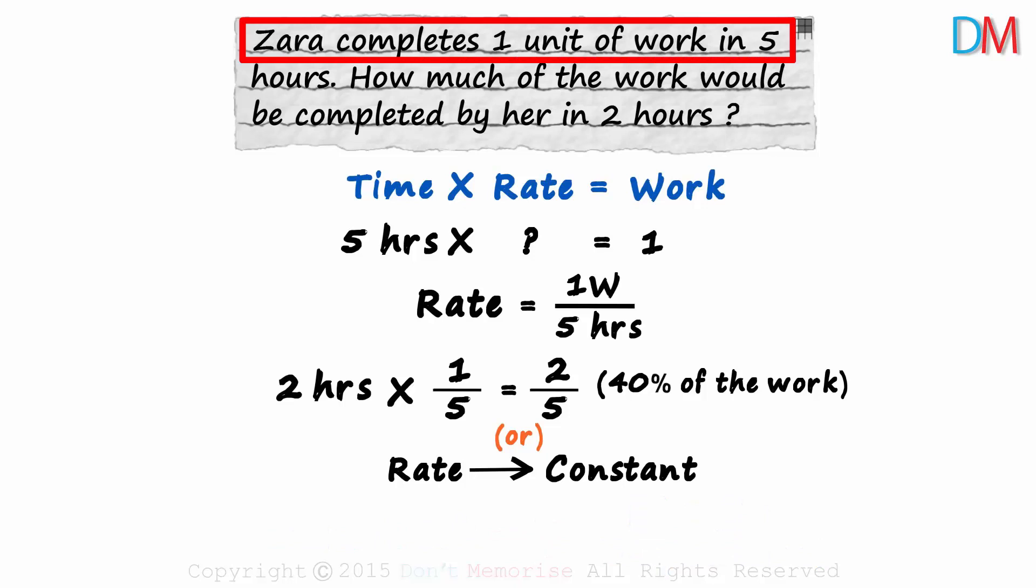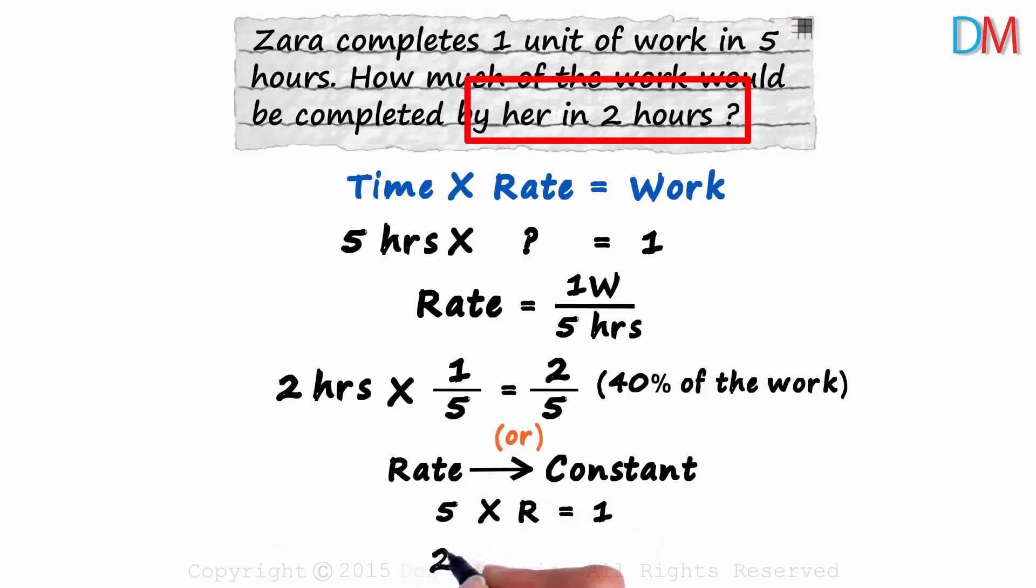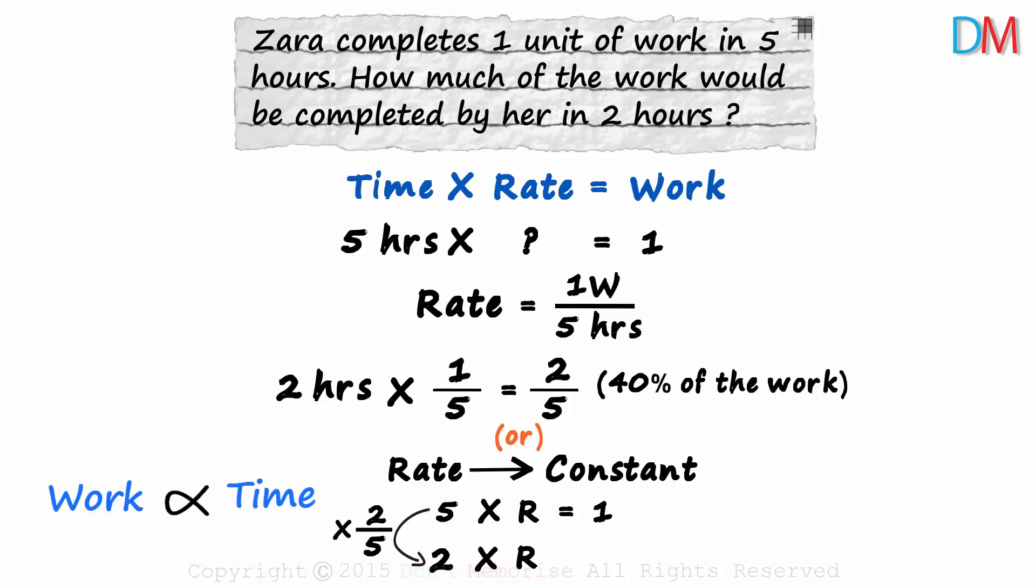In the first case, five times R is equal to one. And in the second case, she works for two hours and the rate is constant. Five is multiplied with two over five to get two. As the work done is directly proportional to the time spent on doing the work, we also multiply this with two over five. One multiplied with two over five will give us two over five. And that's our answer.